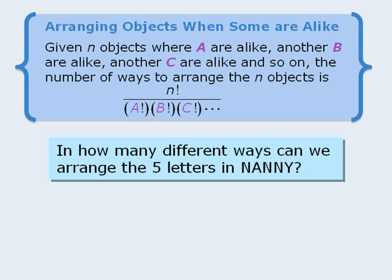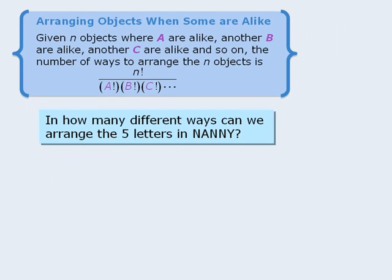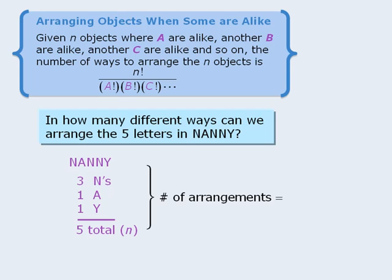Let's apply this rule to our question. So in the word nanny, we have three N's, one A, and one Y. In total, we have five letters. So the total number of possible arrangements will be 5 factorial over 3 factorial times 1 factorial times 1 factorial. This equals 20. So the letters in the word nanny can be arranged in 20 different ways.